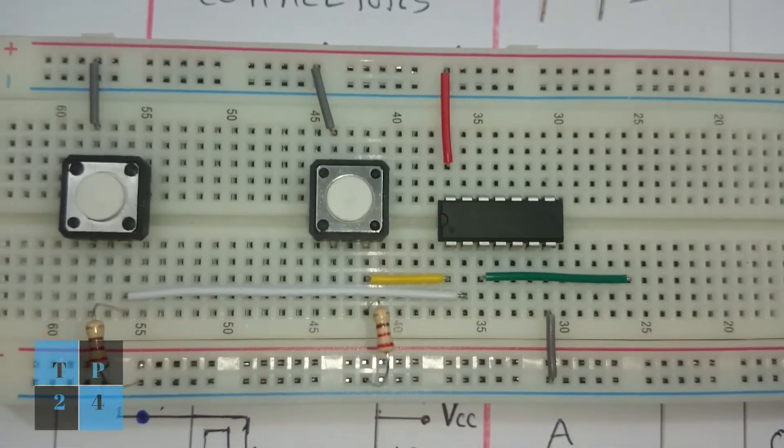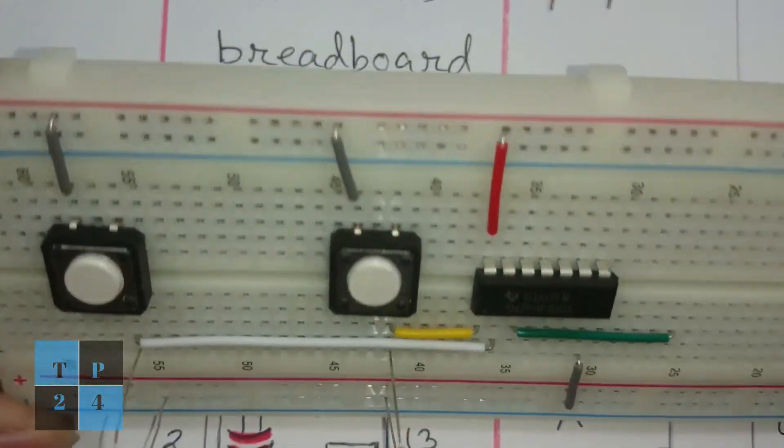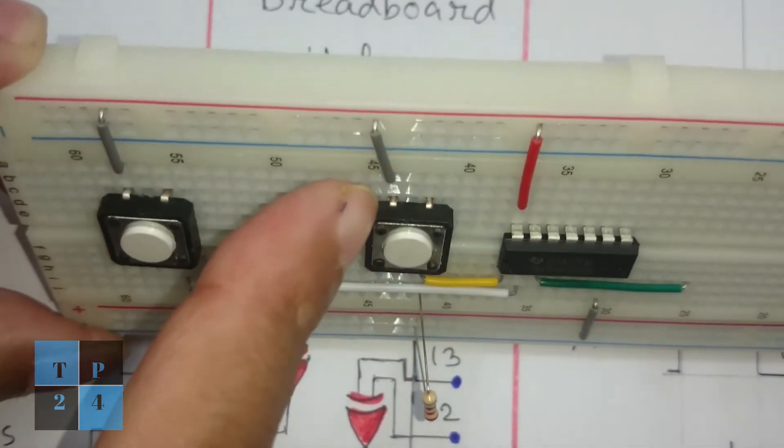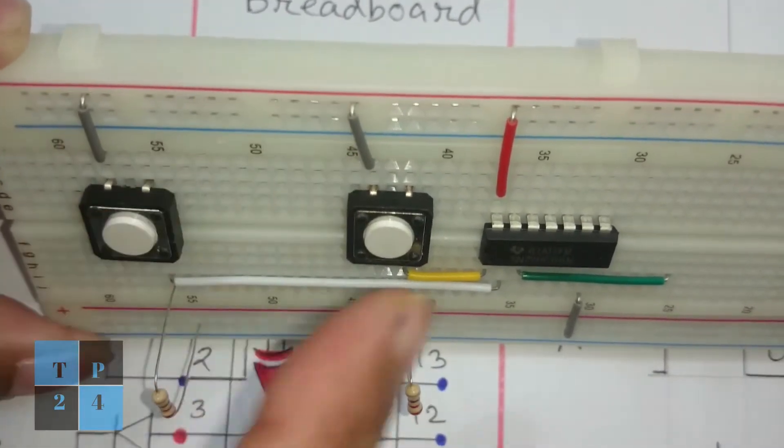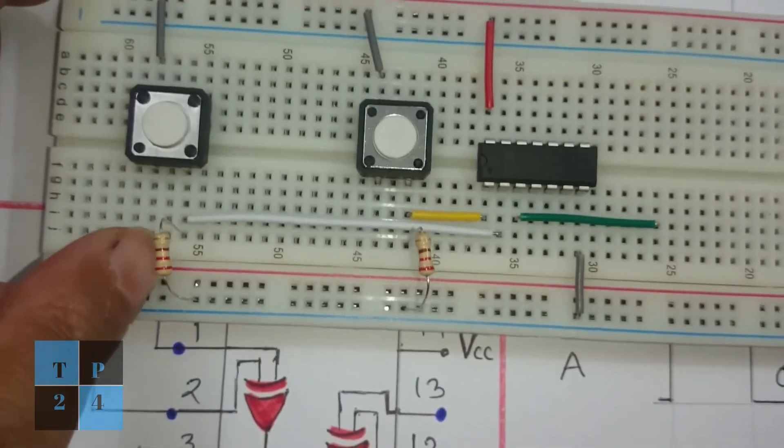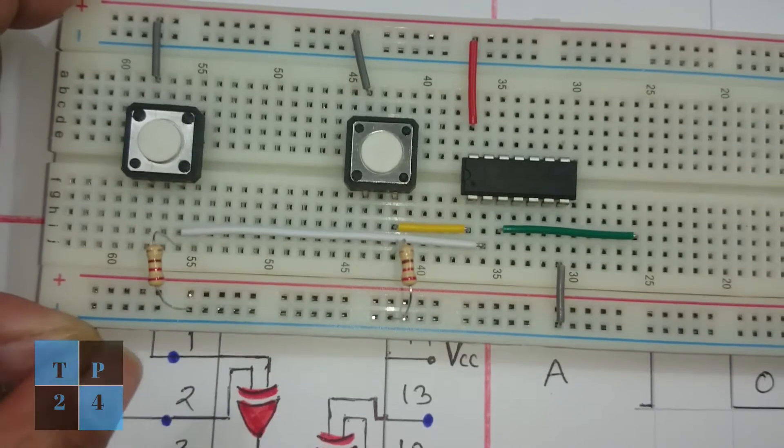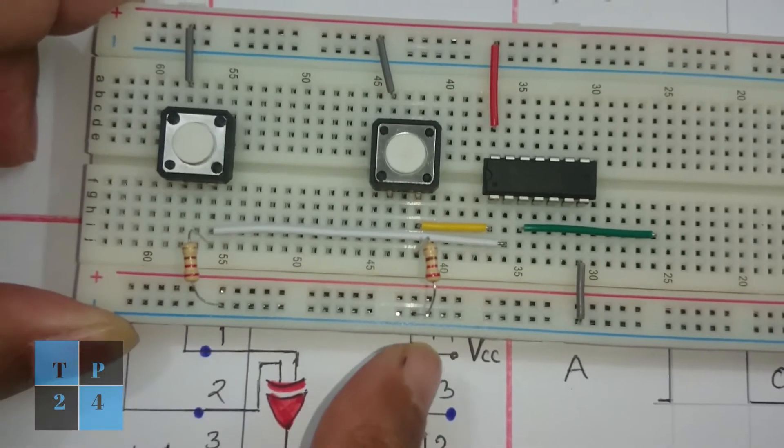I connected from this terminal to the positive rail and from this terminal to the positive rail of these switches. And got the other edge of the switches through a 220 ohm resistance to the ground.